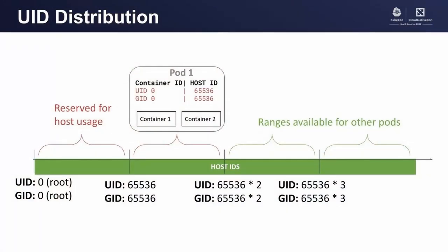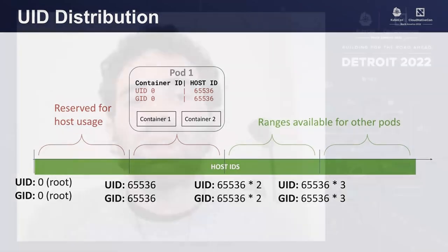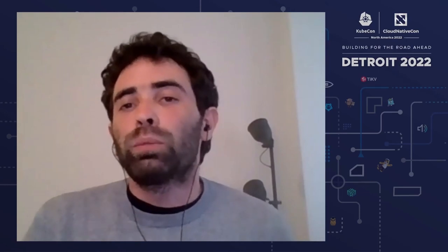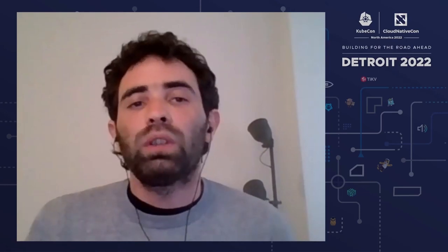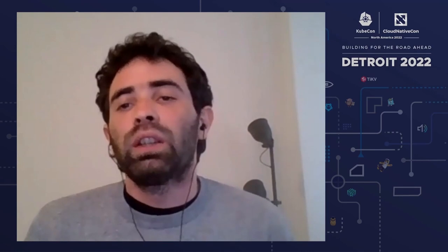The IDs assigned to a pod are chosen automatically by the kubelet. No two pods have the same range of IDs — there is no overlap. You can think of this a little bit like node port on a service: you leave it empty and some free port will be assigned. You don't really care which one as long as it's a free port. The same applies here — some range will be assigned, and we don't really care which one as long as it doesn't overlap with the ranges assigned to other pods.